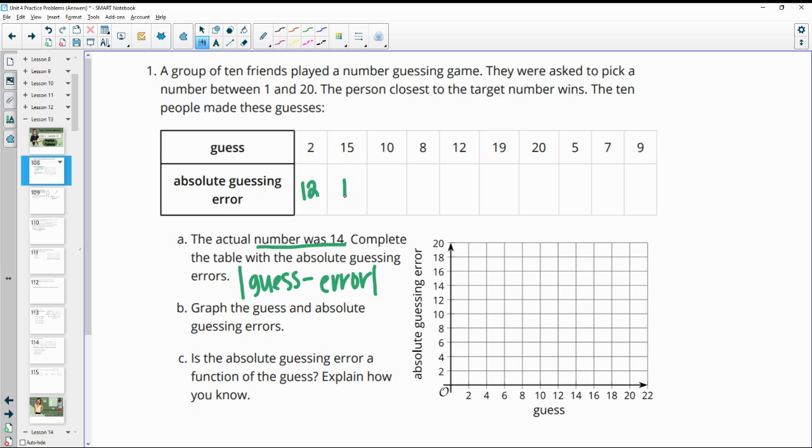15 is 1 away. 10 is 4 away from 14. 8 is 6 away. And you can be subtracting these in your calculator, right? You could be doing 14 minus 8, 14 minus 10, and so on.